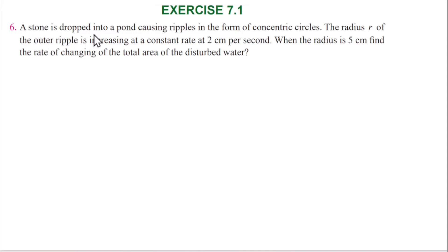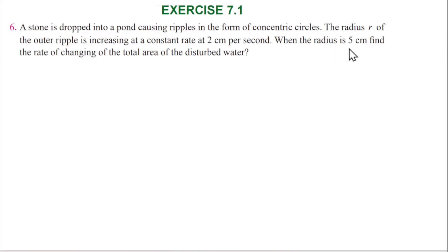A stone is dropped into a pond causing ripples in the form of concentric circles. The radius r of the outer ripple is increasing at a constant rate of 2 cm per second. When the radius is 5 cm, find the rate of change of the total area of the disturbed water.